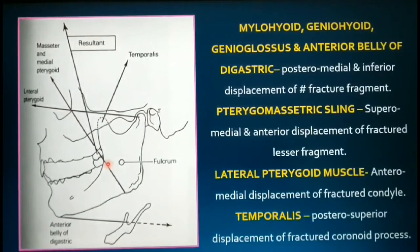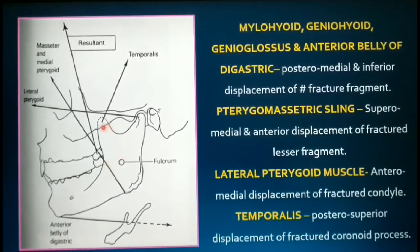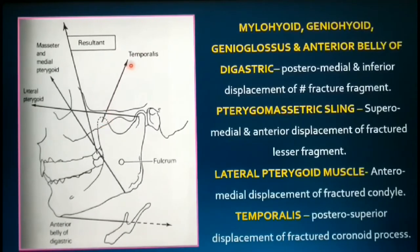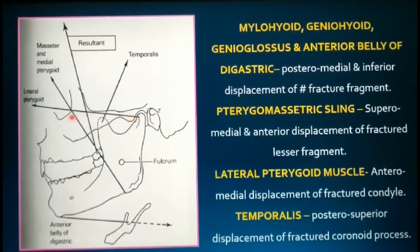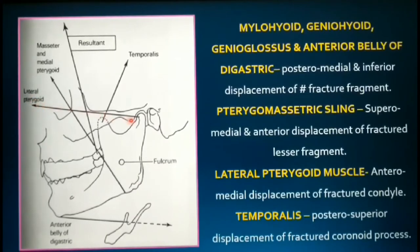The temporalis has an elevating and protruding action and is attached to the tip of the coronoid process. In a fracture, it tends to displace the segment in a posterior and superior direction. Similarly, the lateral pterygoid has two sets of actions produced by its internal and external components. The internal component is responsible for anteromedial displacement of the condylar head in a superior direction, while the external component moves the condylar head in an inferior direction.